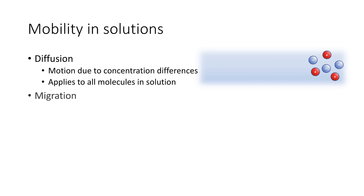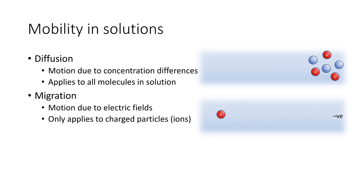Migration, by comparison, is motion due to electric fields. So if we put an electric field across our solvent, we would expect our ions to move in the direction of that electric field relevant to their charge. It only applies to charged particles in solution — so the ions that we're talking about.